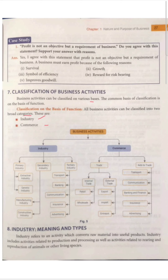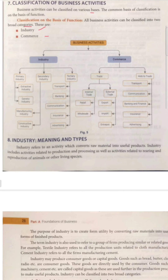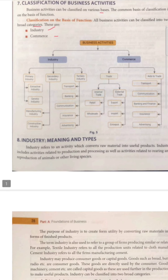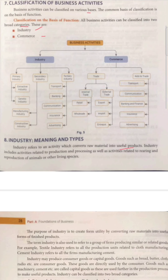Today's lecture is on industry. Industry refers to an activity which converts raw material into useful products. Industry includes activities related to production and processing, as well as activities related to rearing and reproduction of animals or other living species.